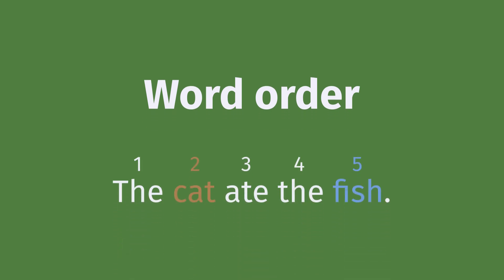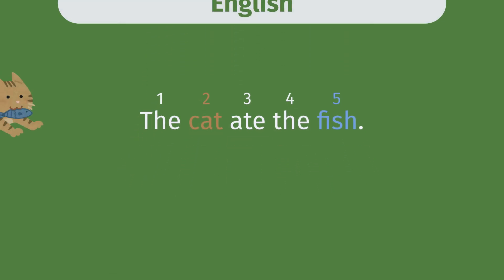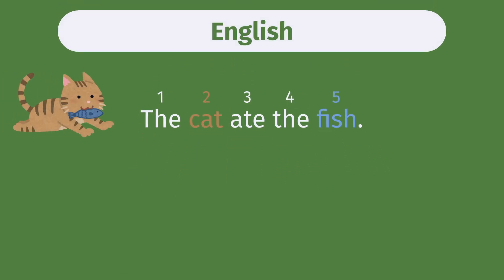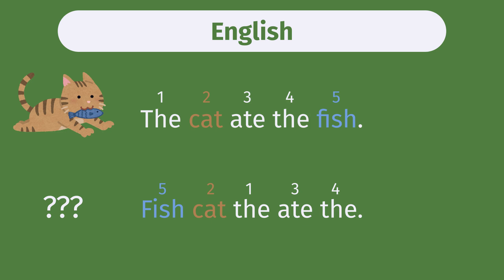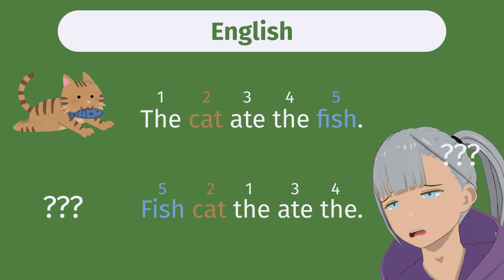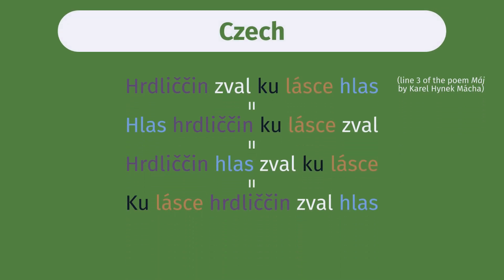Word order is the order of the words in the sentences of a language. Some languages have fairly fixed word order, such as English, where it's hard to change the order of words in a sentence without changing its meaning or making it complete gibberish. Other languages such as Latin and Czech have relatively flexible word order.